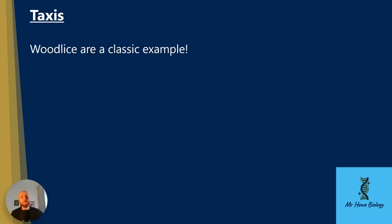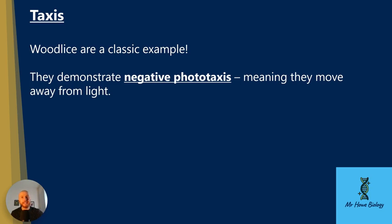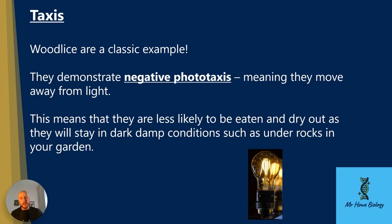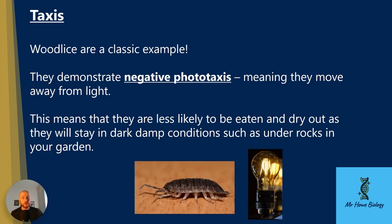A classic example that may come up in the AQA A-level biology exam is wood lice. Wood lice demonstrate negative phototaxis, meaning they move away from the light. This means they're less likely to be eaten and dry out because they're more likely to be found under rocks in dark, damp conditions where predators such as birds cannot eat them. So with a light source here, we can see the wood louse will demonstrate negative phototaxis, moving away from that light source.